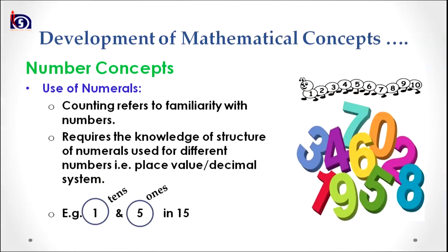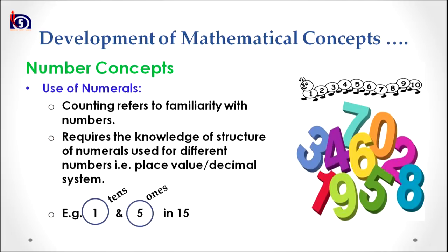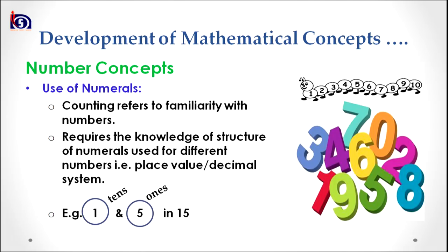Coming to the second sub-concept of number concept, that is the use of numerals. Under use of numerals, counting refers to familiarity with numbers — when we are using numbers, numbers carry some kind of meaning. The meaningful use of numbers also requires knowledge of the structure of numerals, that is, place value and the decimal system. For example, in 15, the 1 comes at the tens position and the 5 comes at the ones position. If the child is not able to understand place value, he or she won't be able to perform different operations with numerals.